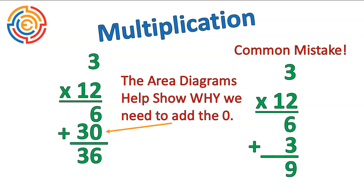So using the area diagram, it helps to show why we need to add that 0. It's a visual way that makes us know that's not the equivalent of 3. That's 30 squares, not 3 squares. And it helps us to recognize when we were making mistakes and why we're making mistakes.